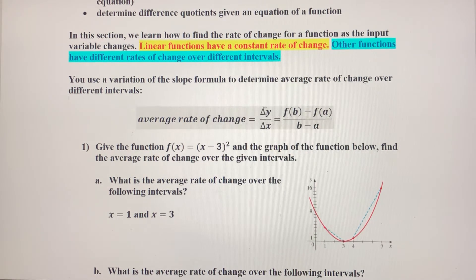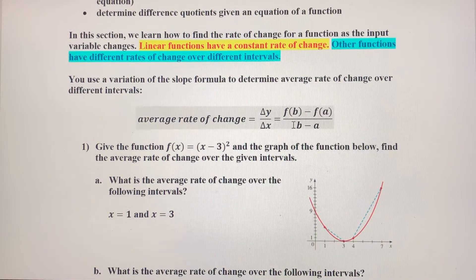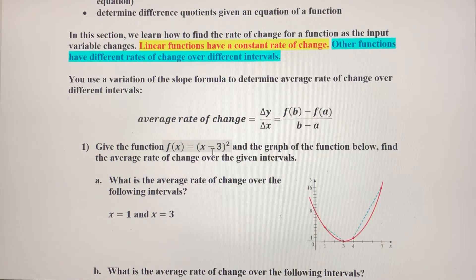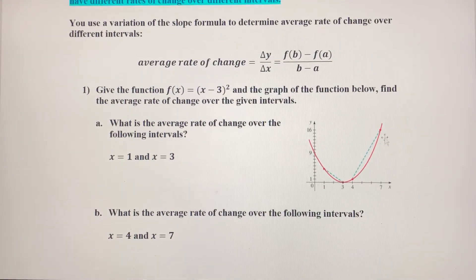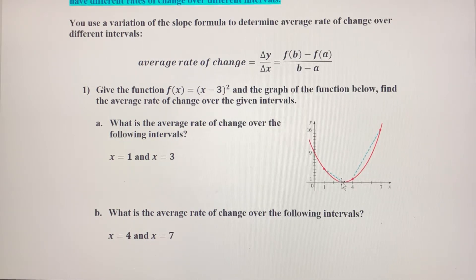Average rate of change is still change in y over change in x. We're going to take the function value of b, which in this case would be 3, minus the function value at a, which in this case is 1, over b minus a. This is change in y in the numerator over change in x. It just looks a little different because we're not dealing with strictly a linear function. So we want to find the average rate of change of f(x) = (x − 3)² from x = 1 to x = 3.